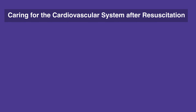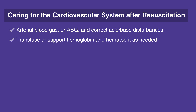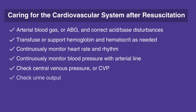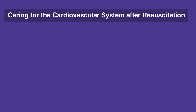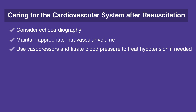When caring for the cardiovascular system after resuscitation, follow this checklist: Arterial blood gas, or ABG, and correct acid-base disturbances. Transfuse or support hemoglobin and hematocrit as needed. Continuously monitor heart rate and rhythm. Continuously monitor blood pressure with arterial line. Check central venous pressure, or CVP. Check urine output. Chest X-ray. 12-lead ECG. Consider echocardiography. Maintain appropriate intravascular volume. Use vasopressors and titrate blood pressure to treat hypotension if needed.